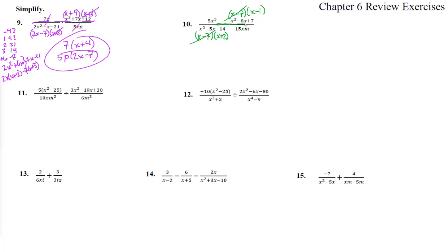Multiplication combines everything together, so the x minus 7s cancel. The x here cancels one factor and leaves a 4, and the 5 and 15 leave a 3 on the bottom. We have x to the fourth times x minus 1 all over 3m times x plus 2.